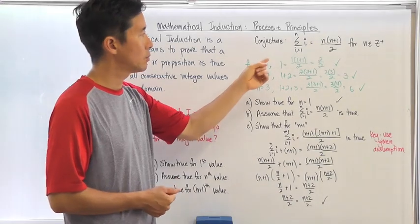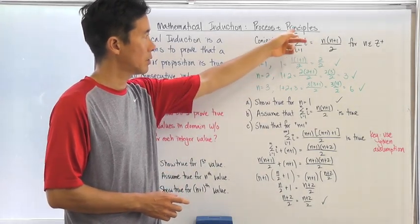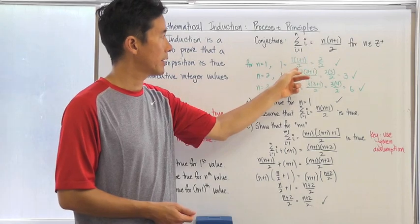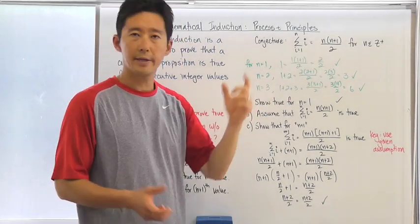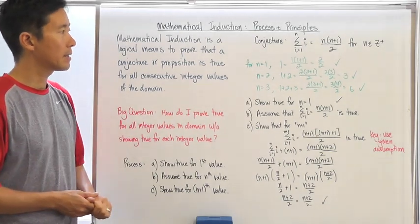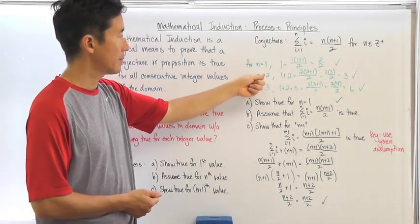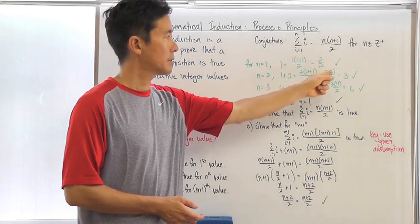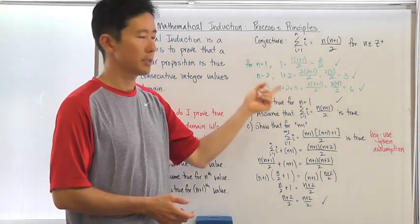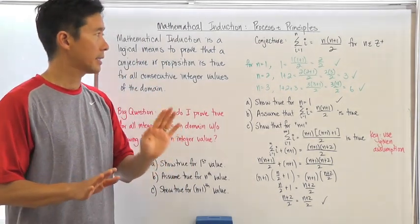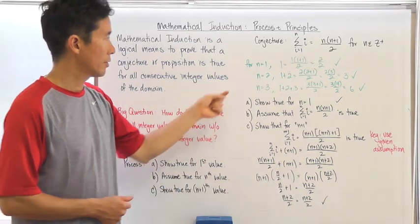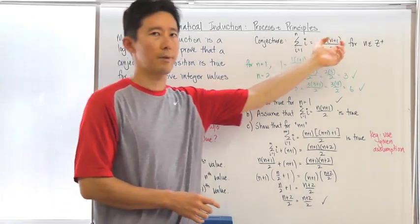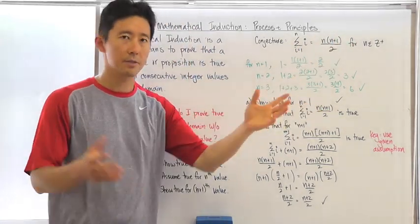For example, if I chose n equals 1, then this summation is from i equals 1 to 1 of i — the only value is 1. Substituting into the formula gives 1 times (1 plus 1) divided by 2, which is 2 over 2, which equals 1. If n equals 2, then I get 1 plus 2 equals 2 times (2 plus 1) divided by 2 — that's 2 times 3 over 2, which equals 3, and indeed 1 plus 2 is 3. The left-hand side and right-hand side come out true for n equals 1 and 2, and for 3 as well. But the question is how do we know it's true for all of them without going through each one?